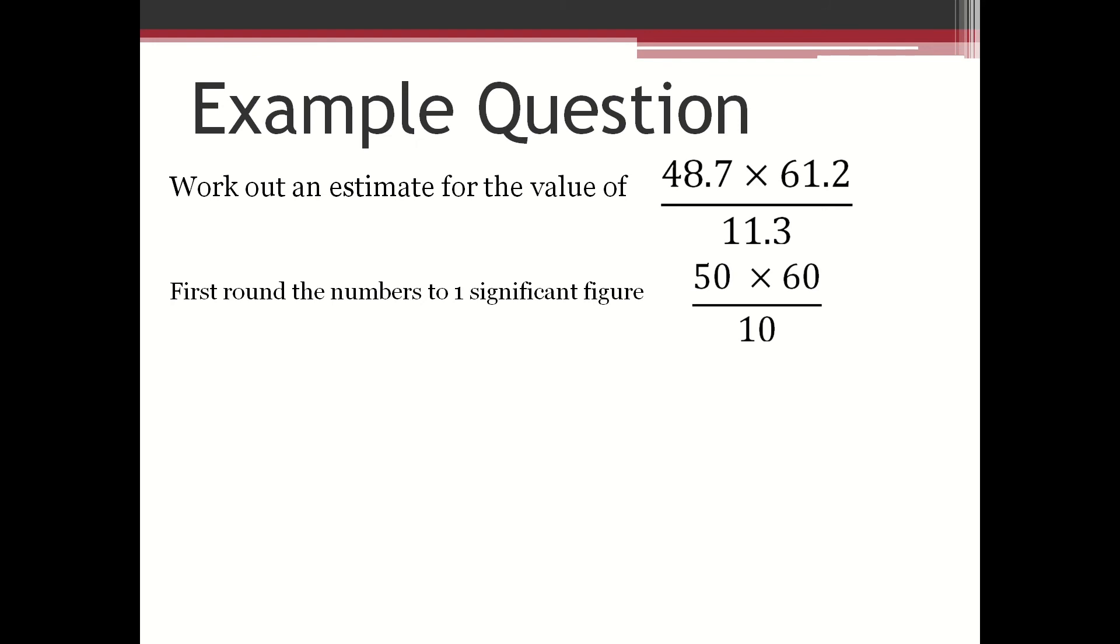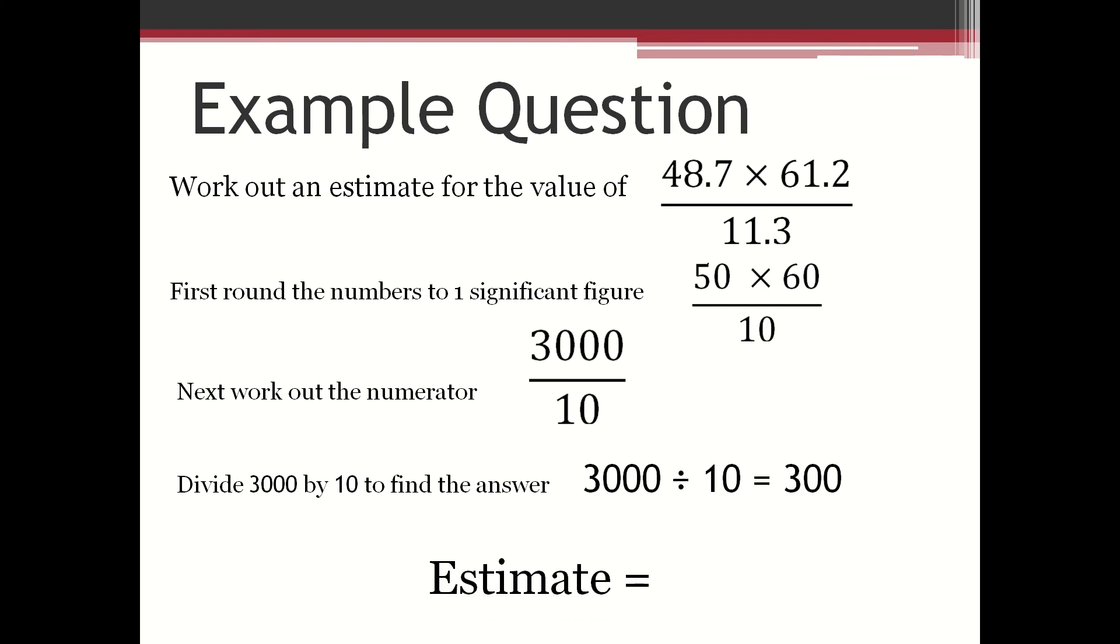which would become 50 multiplied by 60 divided by 10. Next, work out the numerator, which is 50 multiplied by 60, which is 3000. Divide 3000 by 10 to find the answer, which is 300. Therefore, the estimate is 300.